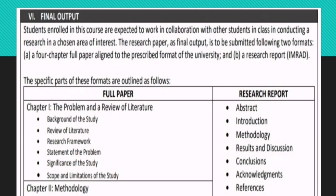For the final output, students enrolled in this course are expected to work in collaboration with other students in conducting your research in a chosen area of interest. The research paper, as your final output, is to be submitted following two formats: A, in a four-chapter full paper aligned to the prescribed format of our school, and B, in an IMRAD report. I'll teach you how to make an IMRAD report later in our discussion.